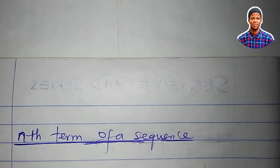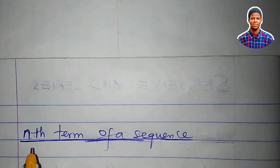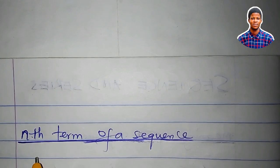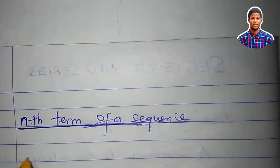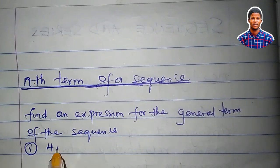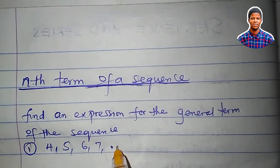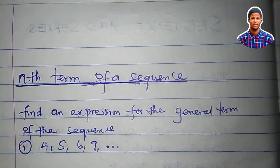Now, let us talk about the nth term of a sequence. We can say nth term, or we can say general term, or we can also say last term. I want to find the general term of the sequence 4, 5, 6, 7.